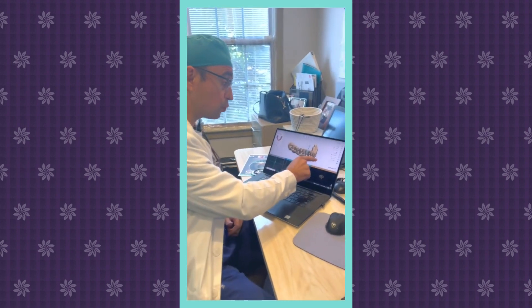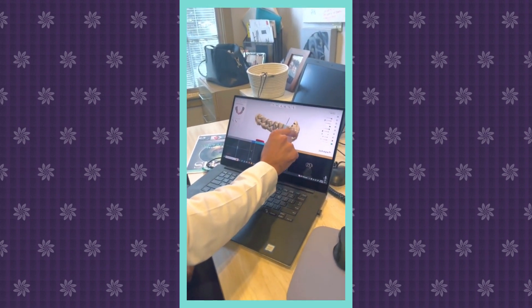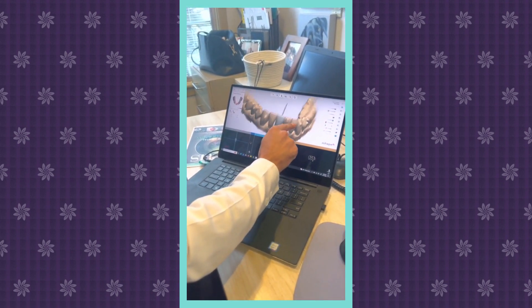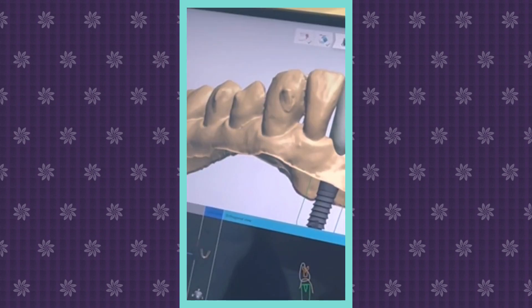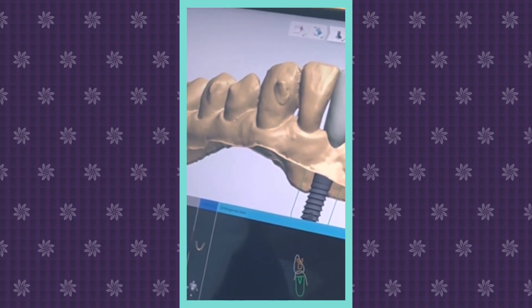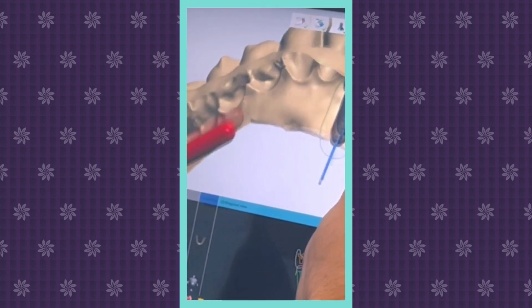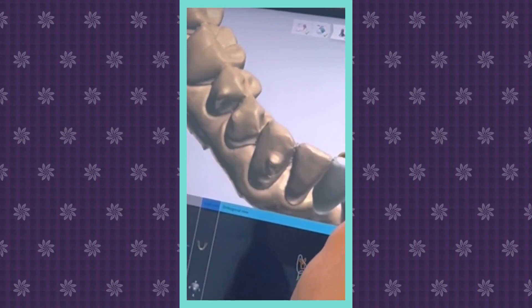So what we use here, this is a software where we start with the end in mind. In other words, this person is missing this wide tooth, we're going to place the ideal wide tooth in the place of the missing tooth right here. Once we have that, then we're going to plan an implant that appropriately supports that tooth in the proper angulation.